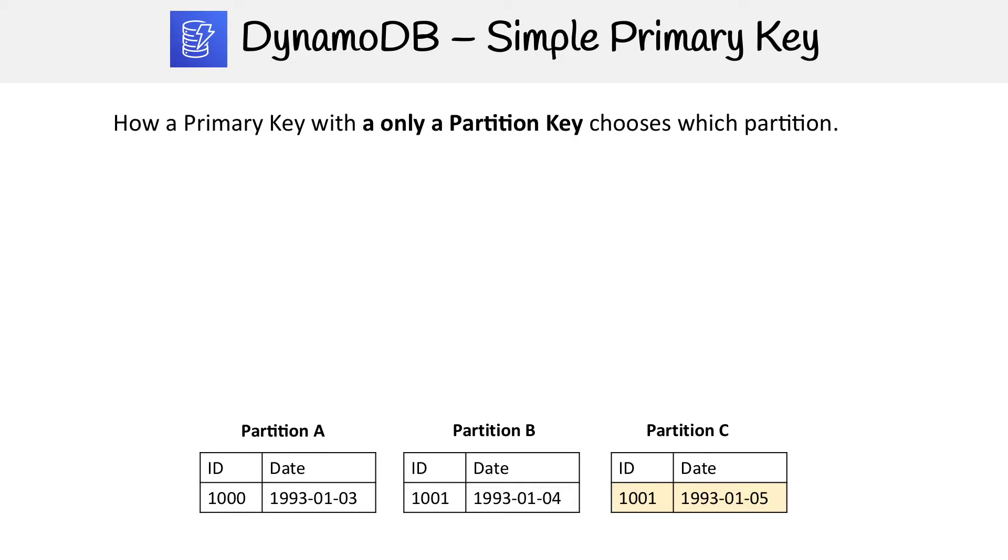Let's talk about how a primary key with only a partition key chooses which partition it should write data to. If you only have a partition key, that makes it a simple primary key.